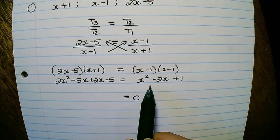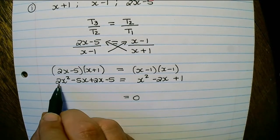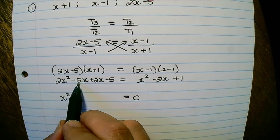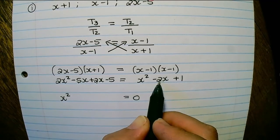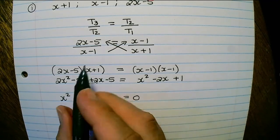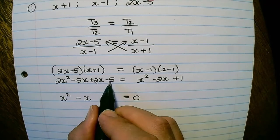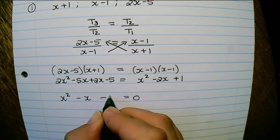And if I rewrite this in standard form I have 2x squared minus x squared which is x squared minus 5x plus 2x minus 2x which will become minus x, and minus 5 minus 1 which is minus 6.